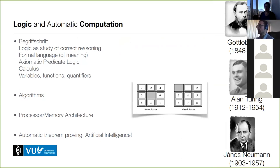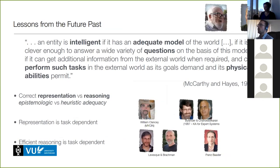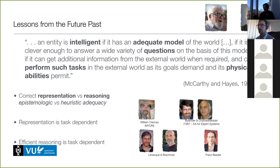You all know Alan Turing, the Turing machine, and the Turing test for intelligence. To von Neumann we owe the processor-memory architecture, and also the birth of AI in the 50s with automatic theorem proving. In knowledge representation, we deal with models of the world, and intelligent entities use these adequate models of the world to answer questions, perform tasks, and perform physical abilities.